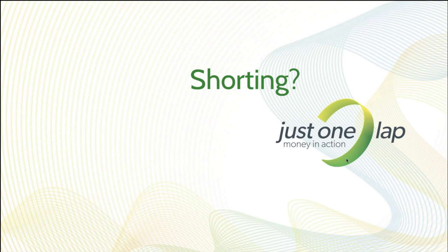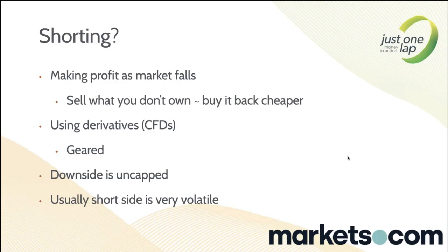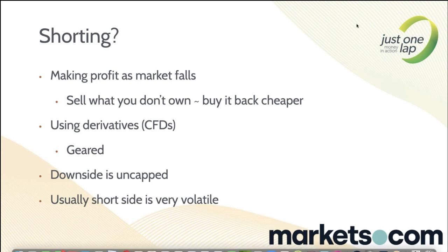First, shorting. A couple of folks asked what we mean. In essence, it's making profit as the market falls. You sell something you don't own, you buy it back for cheaper. So you sell something at $10, it falls to $9, you buy it back at $9, and you've made that one rand difference — the exact opposite of buying at $10 and watching it go to $11. That selling of what you don't own happens in the background; it's managed by the provider you use.